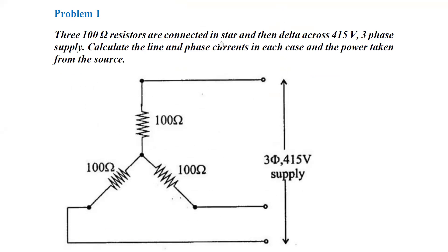300 ohm resistors are connected in star and then delta across a 415 volt 3-phase AC supply. Calculate the line and phase current in each case and the power taken from the source. What is given in the problem: 300 ohm resistors connected in star as well as in delta. We need to calculate line current, phase current, and power taken.